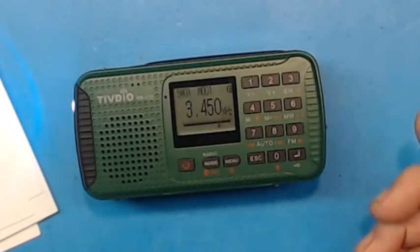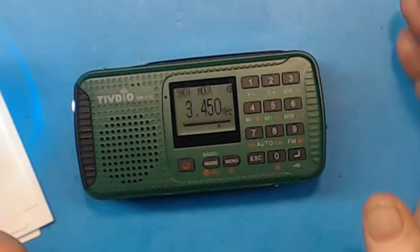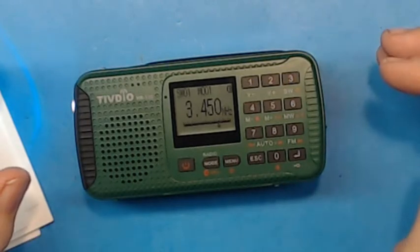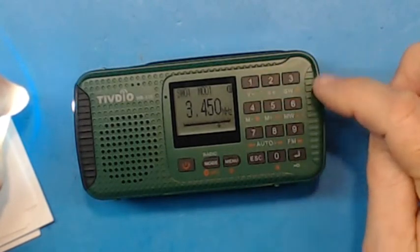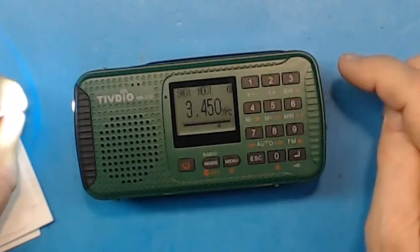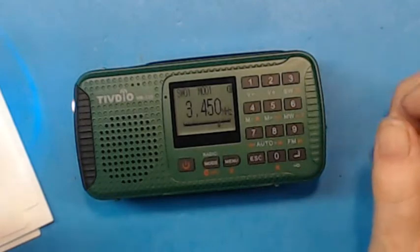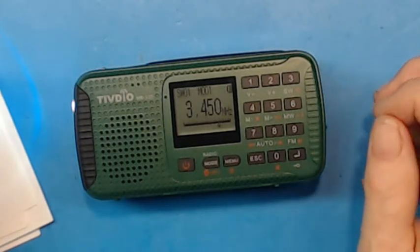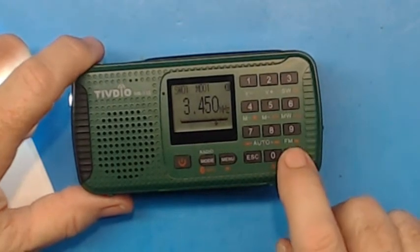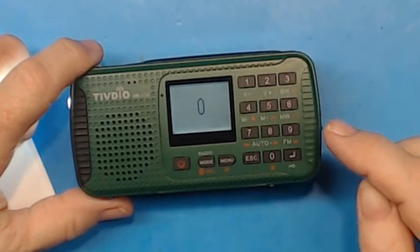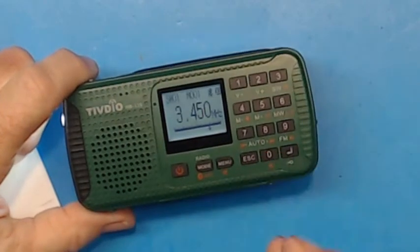We're going to go over those briefly. The first way, which is not intuitive, is to direct tune a frequency. It's got a numeric keypad and you can direct tune. Your first reaction would be to just start punching the keys to punch in the frequency, but that doesn't do it. What you have to do is push the return key first, then it puts you in the mode for selecting your frequency.